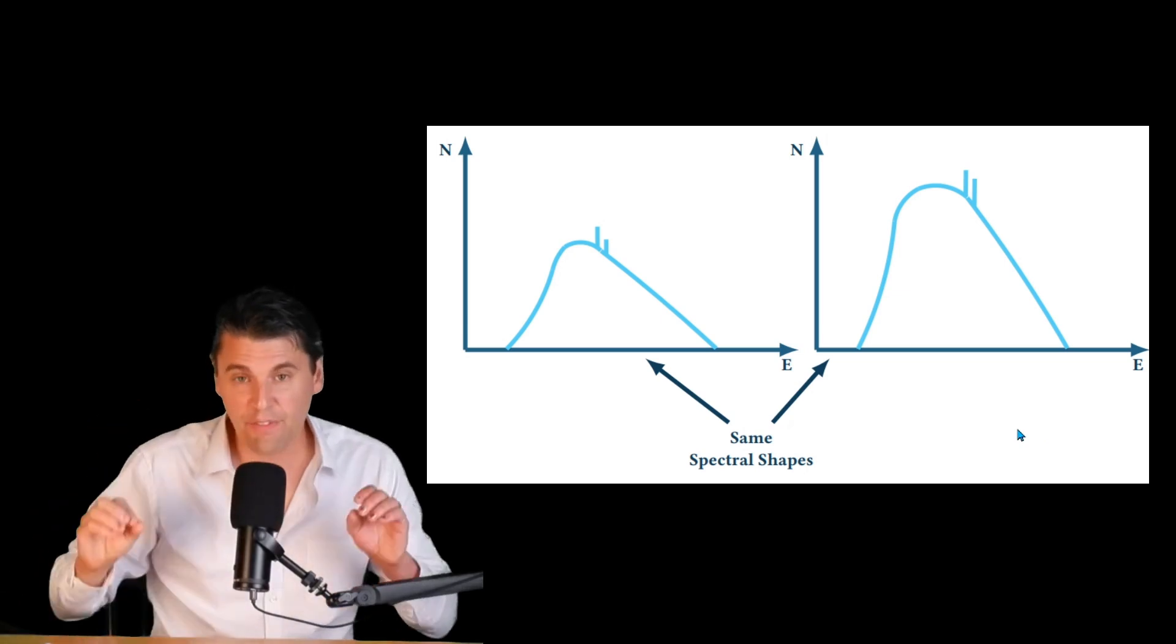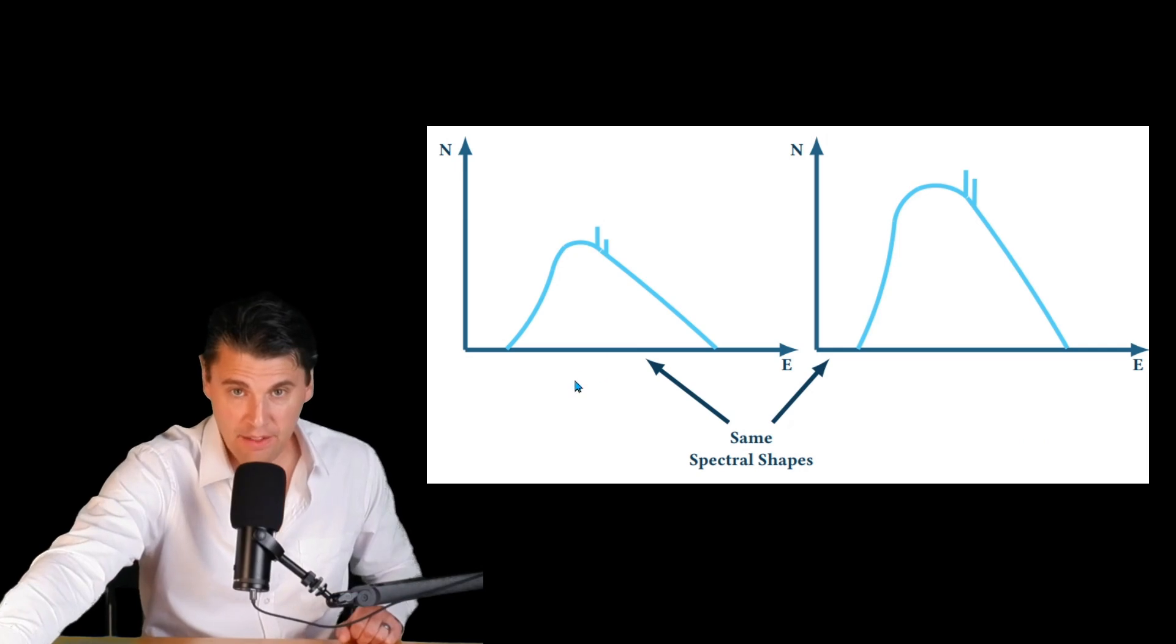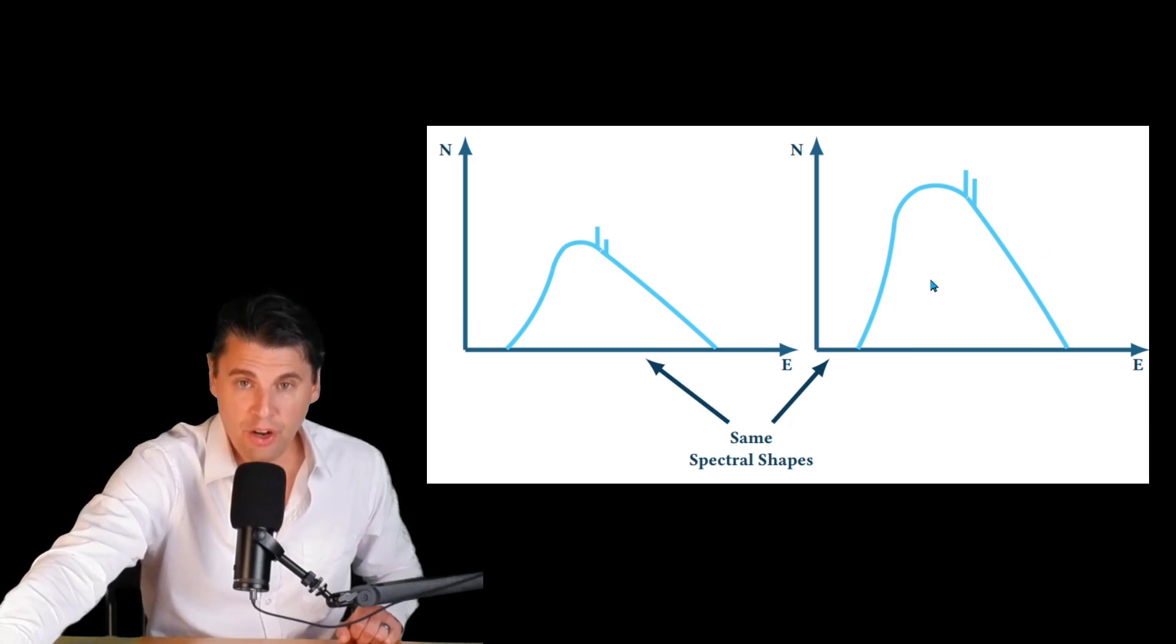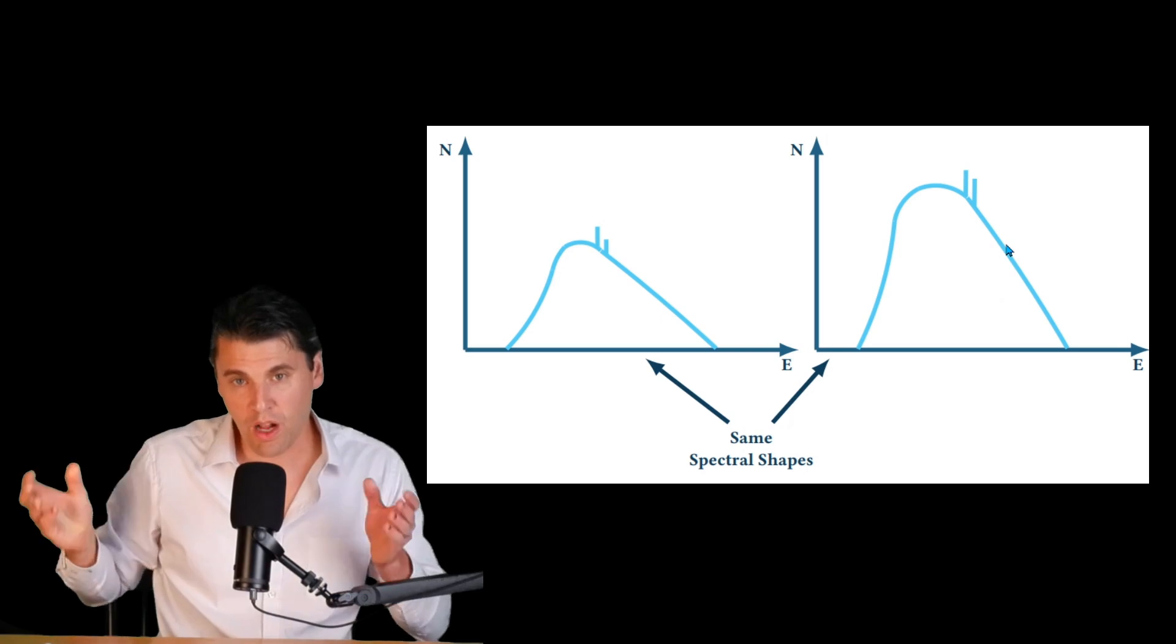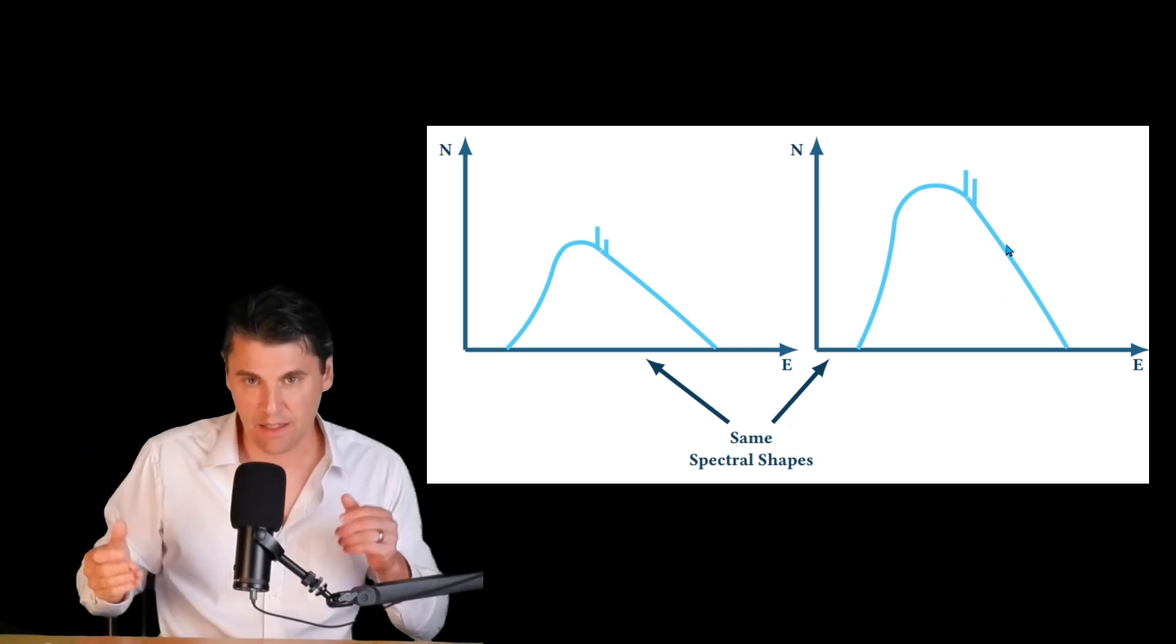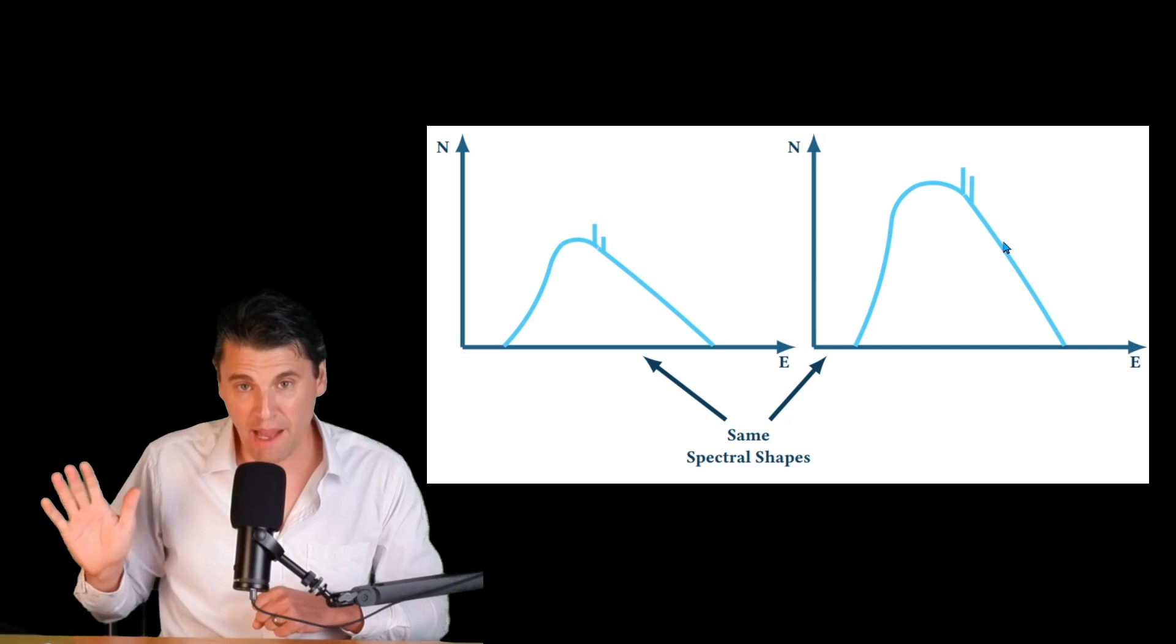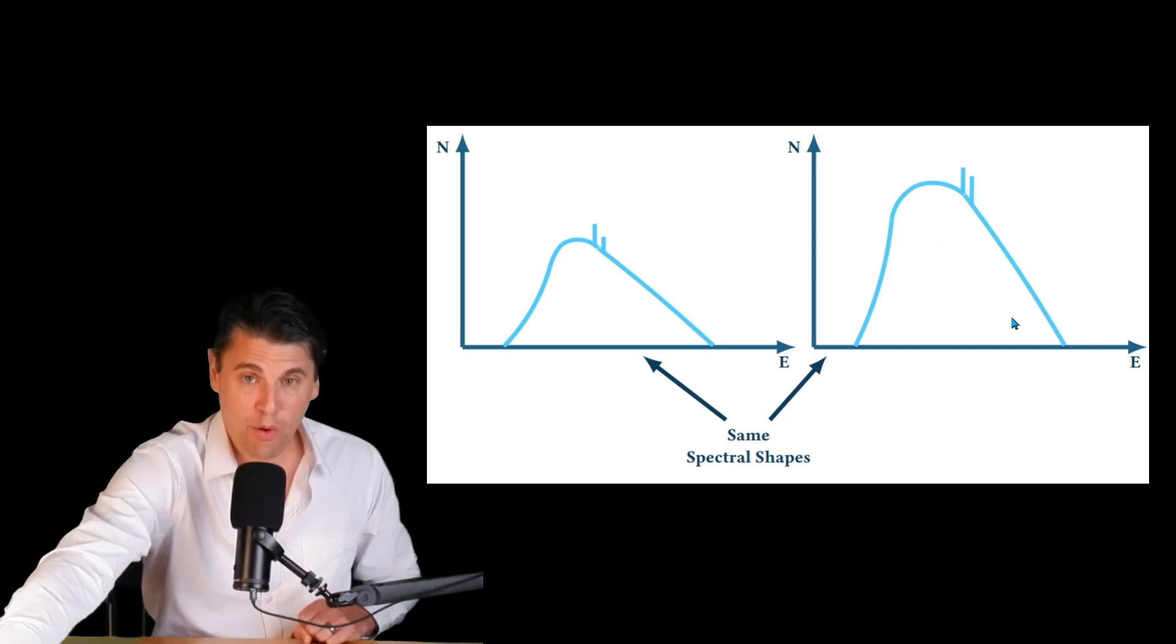On the other hand, if you had the same shape, but a different number of x-rays under the curve, the drawings aren't perfect here, but these are supposed to be the same shape, but a different number of x-rays under the curve. In this case, the number of x-rays we're calling quantity, we're only changing the beam quantity. If we change the tube current that we denote by the mA, that's going to change the beam quantity, but it will not change the shape of your x-ray spectra.